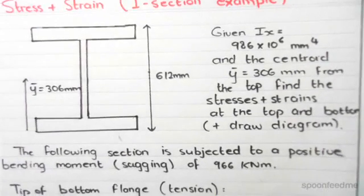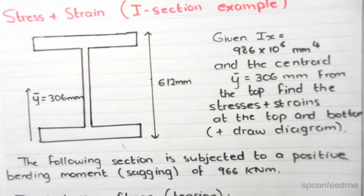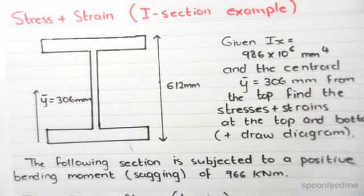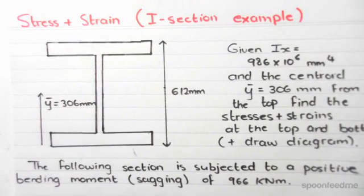Bear in mind that the section is subjected to a positive bending moment, so a sagging bending moment of 966 kilonewton meters.